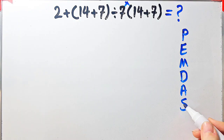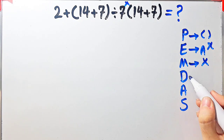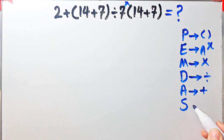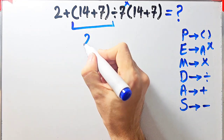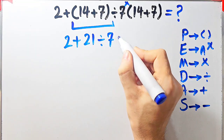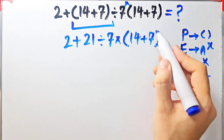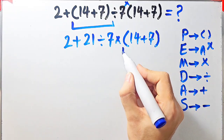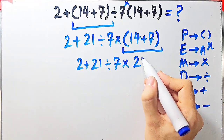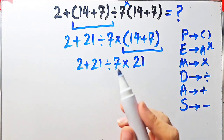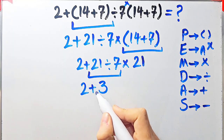P stands for parentheses, E for exponent, M for multiplication, D for division, A for addition, and S for subtraction. According to PEMDAS, first we simplify the parentheses: 14 plus 7 equals 21. Now we have 2 plus 21 divided by 7, then times open parenthesis 14 plus 7 close parenthesis. We simplify that parenthesis: 14 plus 7 equals 21. Now the question is 2 plus 21 divided by 7 times 21. We simplify the division: 21 divided by 7 equals 3. Now we have 2 plus 3 times 21.